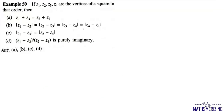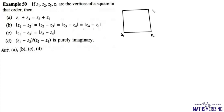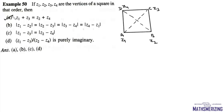The next question: z1, z2, z3, z4 are vertices of a square in order; which of the following are correct? In square ABCD labelled z1, z2, z3, z4, the diagonals bisect each other, so the midpoint of z1 z3 equals the midpoint of z2 z4. Therefore option A is correct.